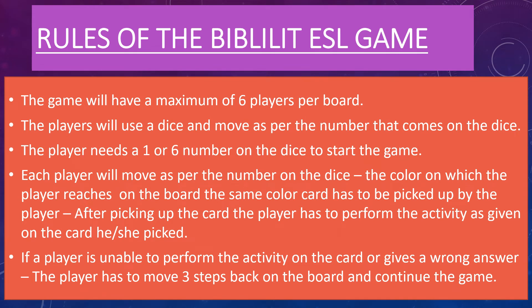The rules of this game are very simple. The game will have a maximum of six players per board. Depending on the size of your class, you can divide the number of players per board — so if you have a class of 12 students you will require two boards. The players will use a dice and move as per the number that comes up, but to start the game the player needs a one or six on the dice. If they don't get one or six, they try again next turn.